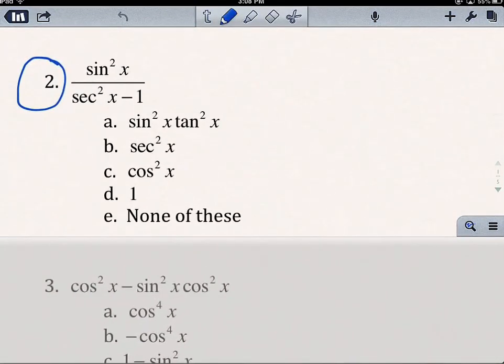Okay, so I want to spend some time, first of all, going through our simplifying trig expressions. So if we look at number 2, we definitely will see some stuff on the test like this, and when I see this sec²x - 1, that makes me think of one of our trig identities. So I know that 1 + tan²x = sec²x, and that's one of our Pythagorean identities.